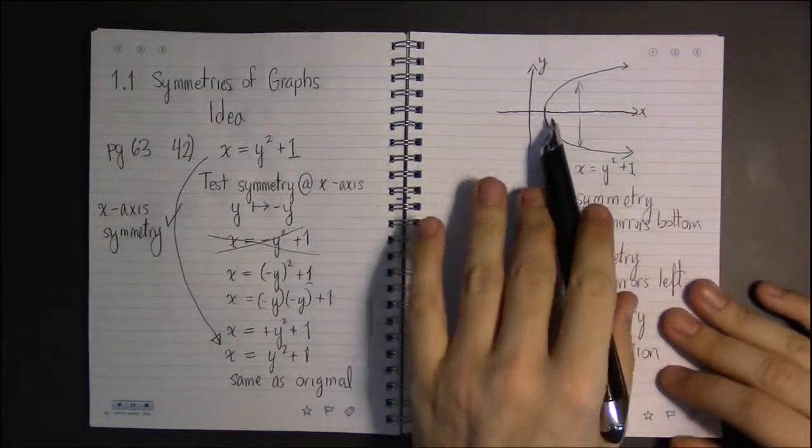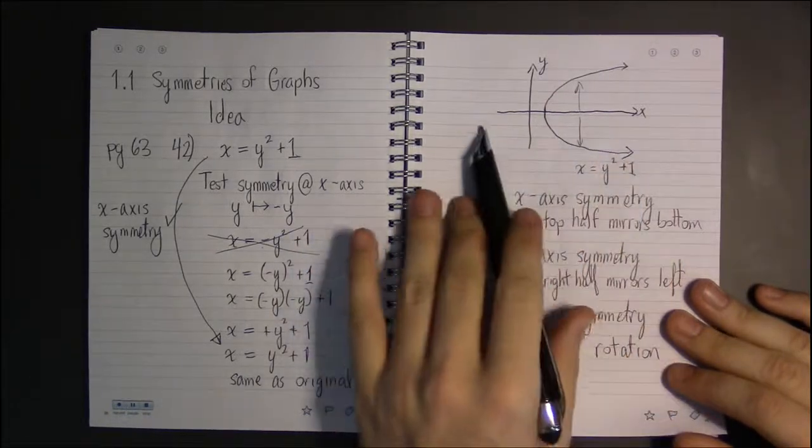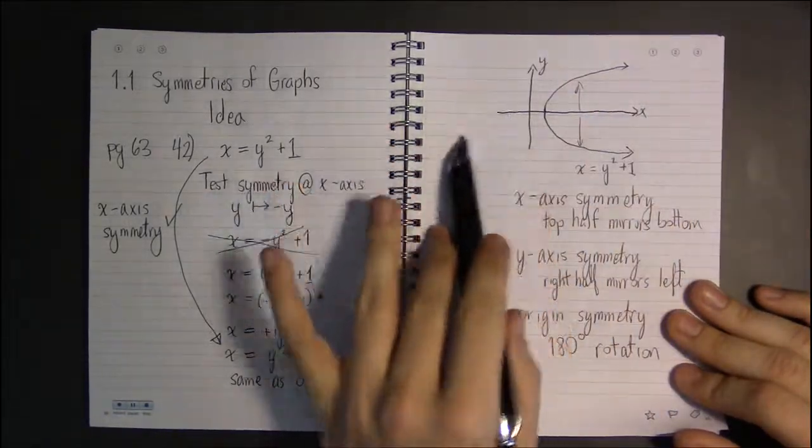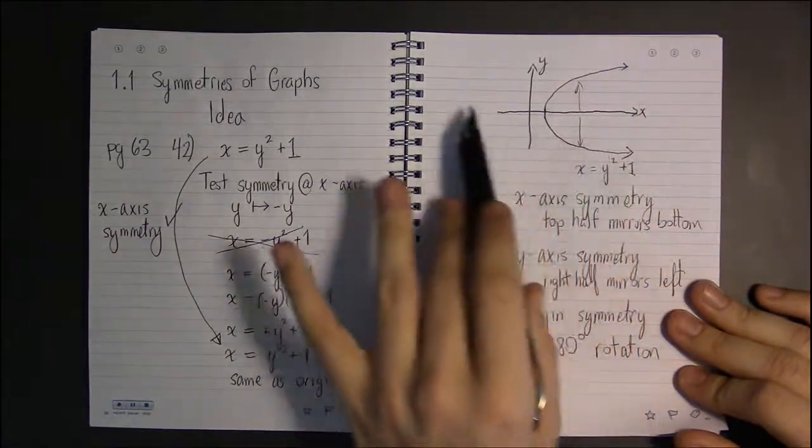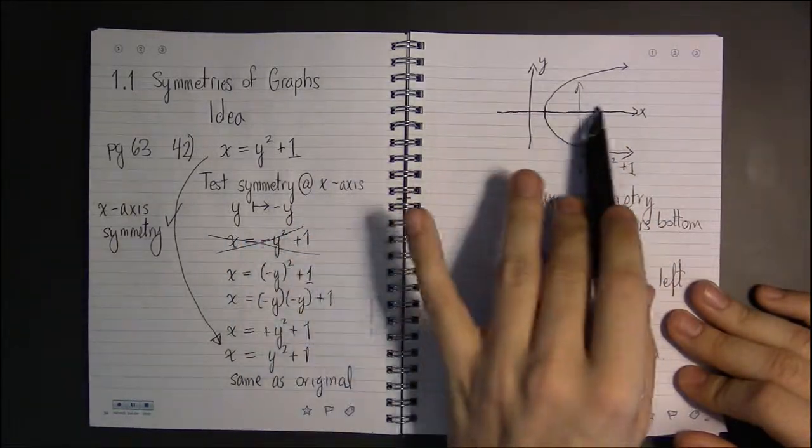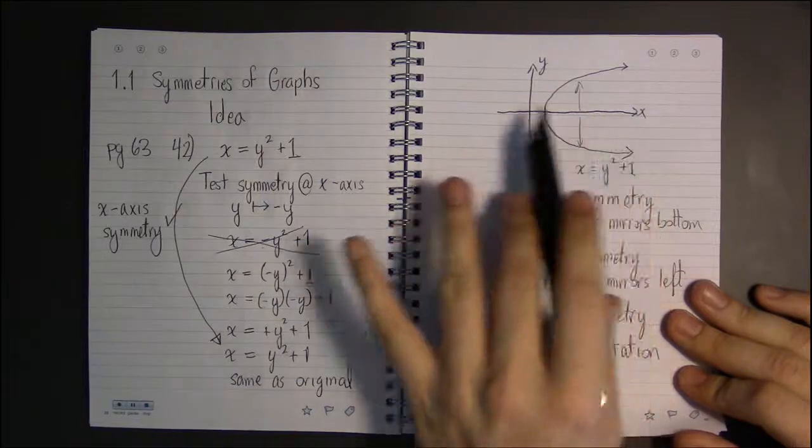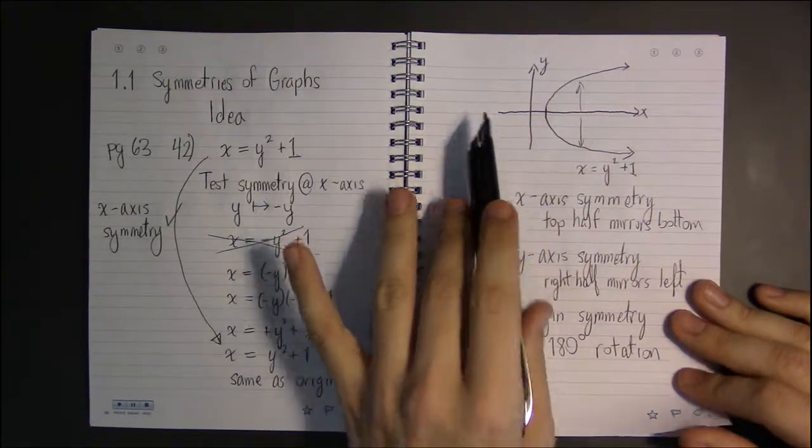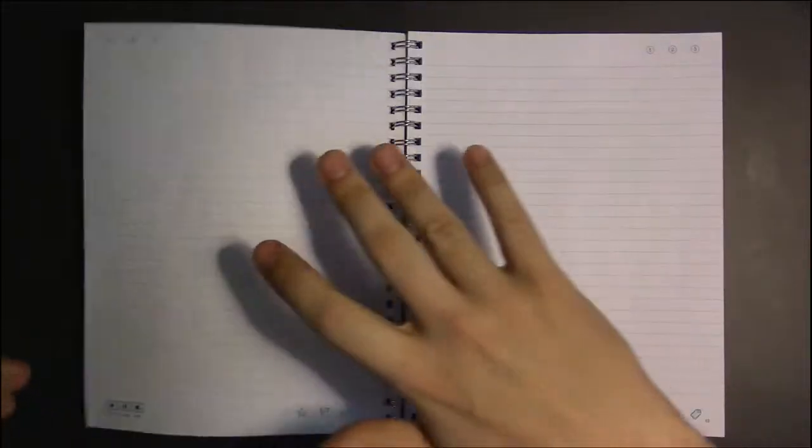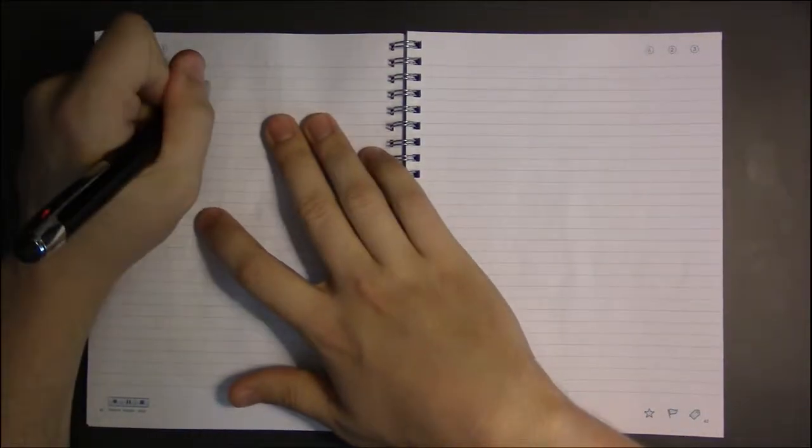For y-axis symmetry, you can look at the graph—it doesn't look like it has any because there's stuff on the right half and nothing on the left. It's clearly not a mirror image, so we're not going to see y-axis symmetry.